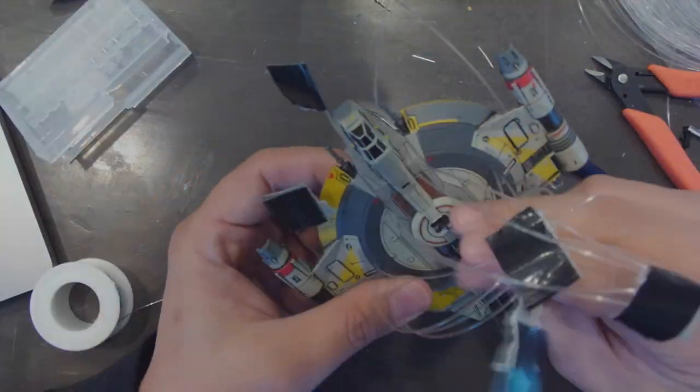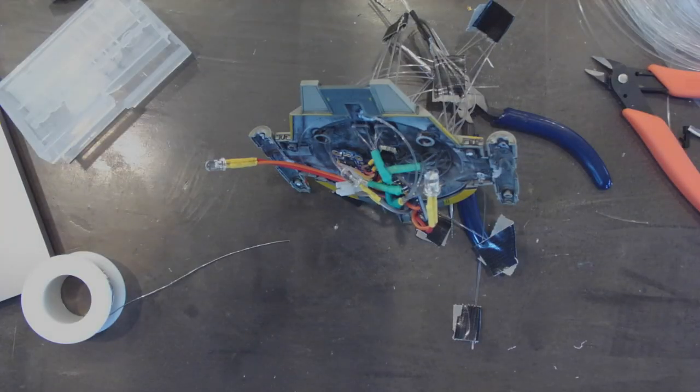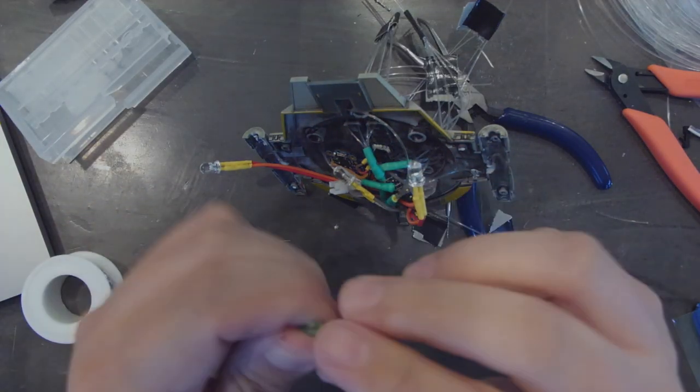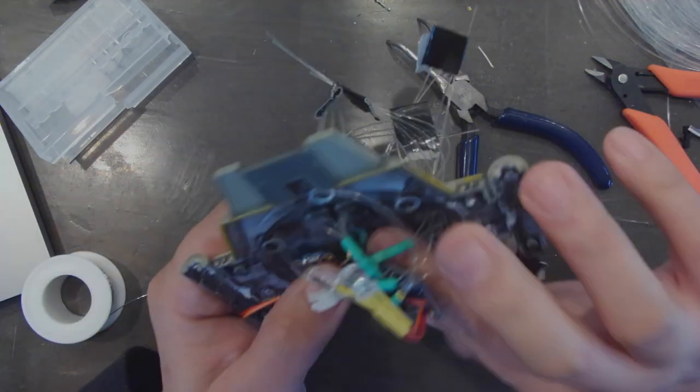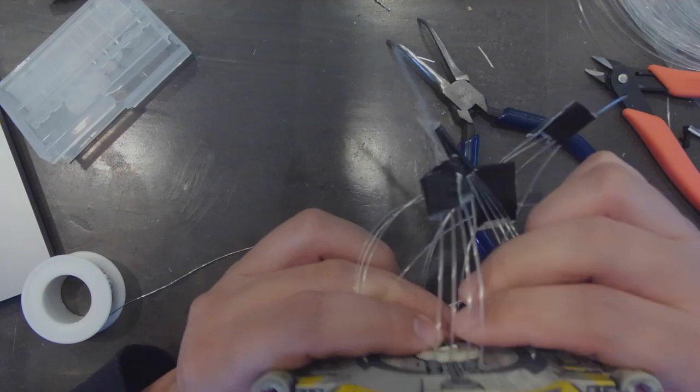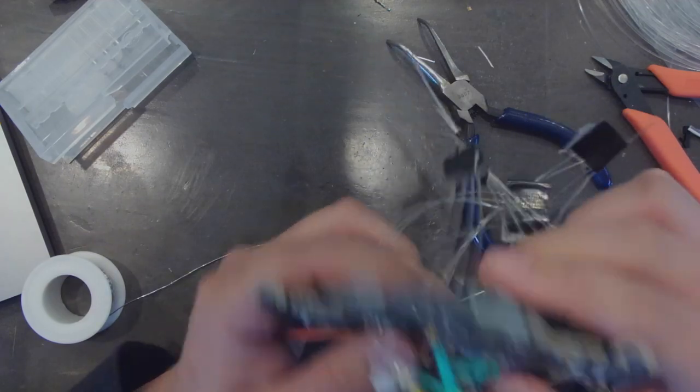Once the fiber optics are threaded I can use a little bit of green stuff to hold the push button switch into place on the top of the Lancer where the turret is going to get attached. Positioning the button is tricky and the green stuff helps with keeping the button in place until I can apply a little bit of super glue.